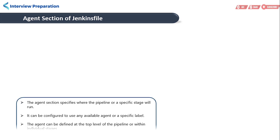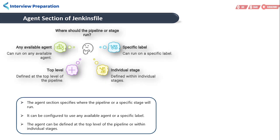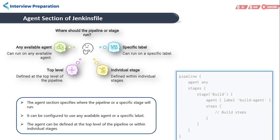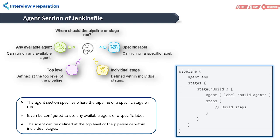Let's talk about the agent section. The agent section specifies where the pipeline or a specific stage will run, allowing you to configure it to use any available agent or a specific label. Here is the example of the agent section in the Jenkinsfile configuration.